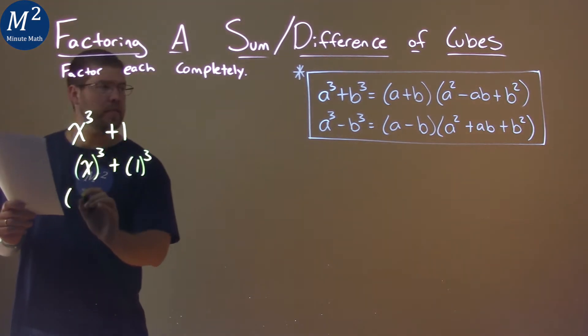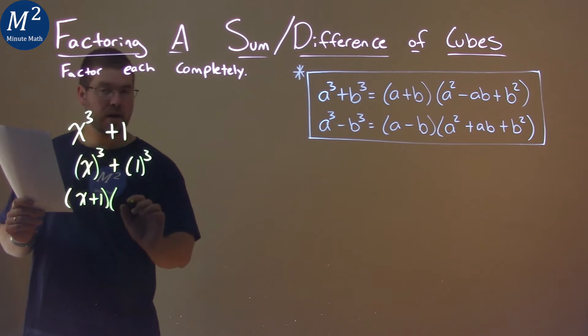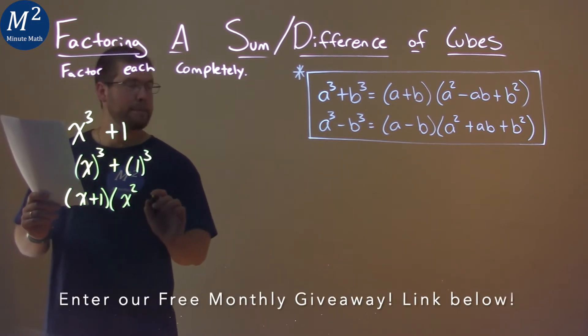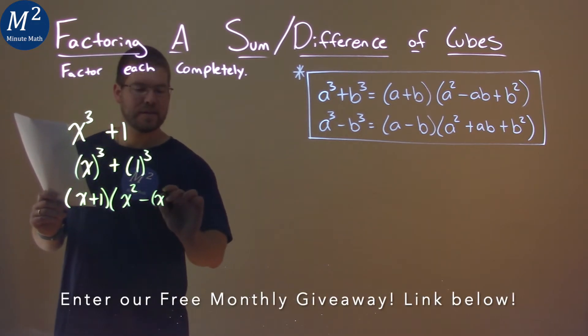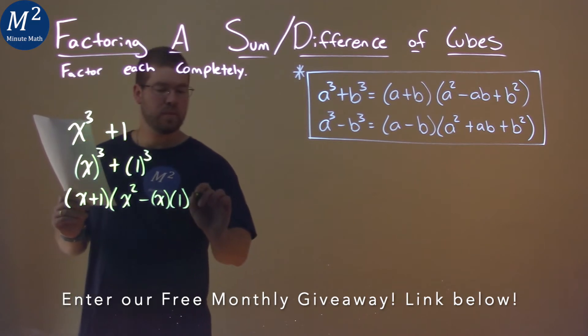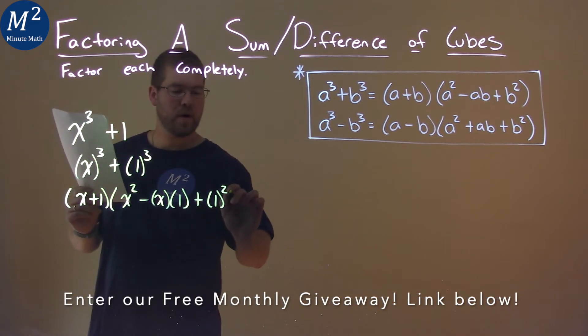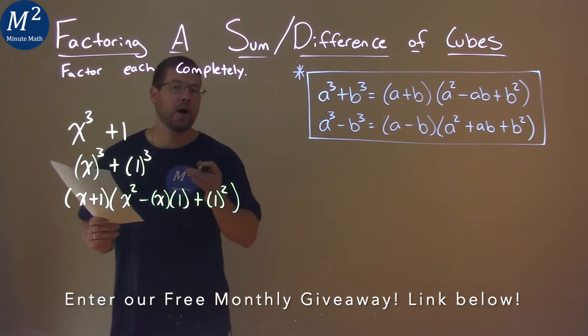We then can write this to be an x plus one times an x squared minus x times one plus one squared. And now we need to simplify.